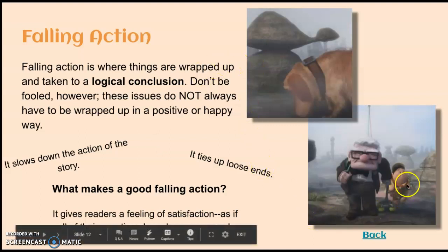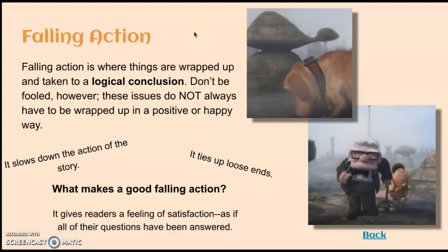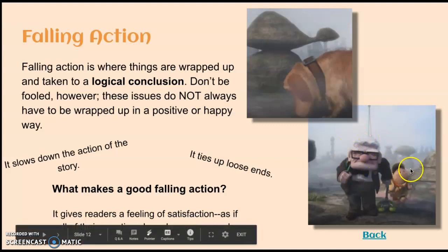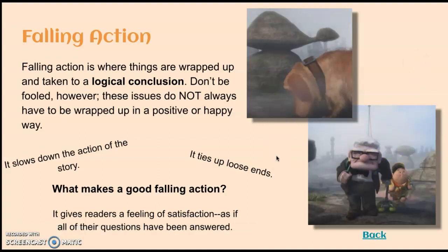Take a second and think about what you might identify as the falling action in Doug's Special Mission. The falling action in this film is when Doug realizes he's located another master. He's sniffing around, he hears a voice, and he sees Carl from the movie Up and Russell, his little friend. He sees them and realizes that he could be happy with them.